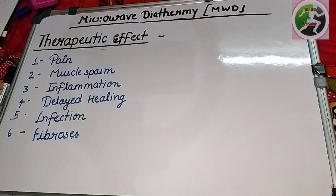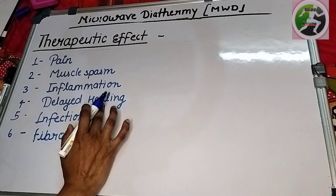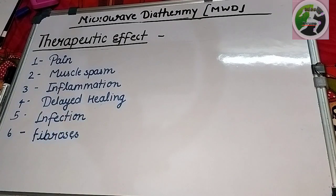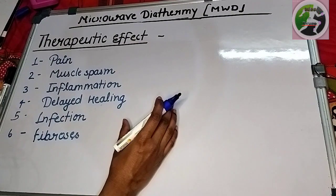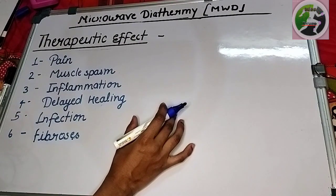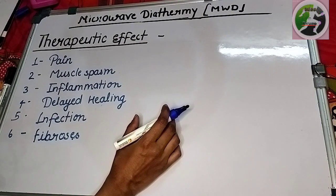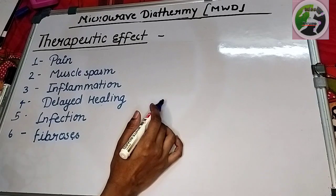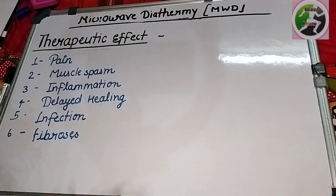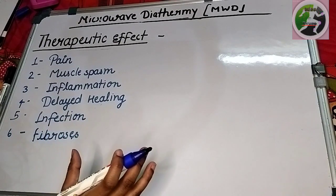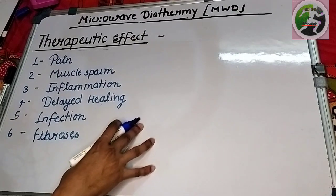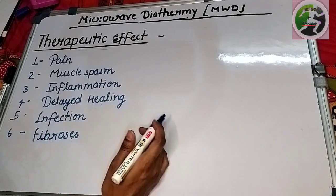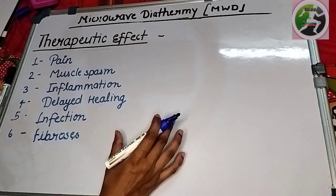The next point is delayed healing. What happens in delayed healing? It means after an injury, pain, or fracture, the healing process is very slow. When the healing process is slow, we use the MWD machine.